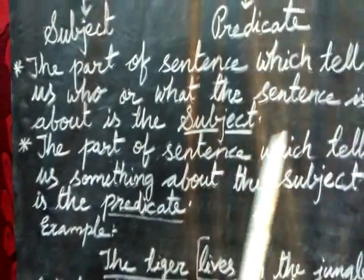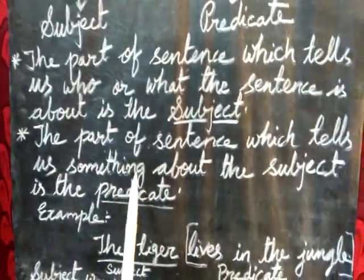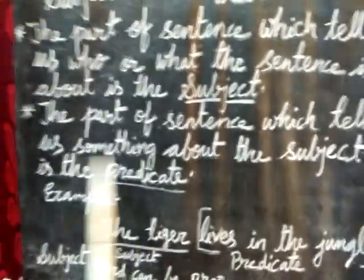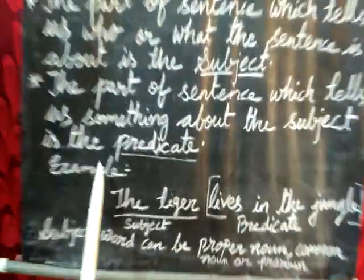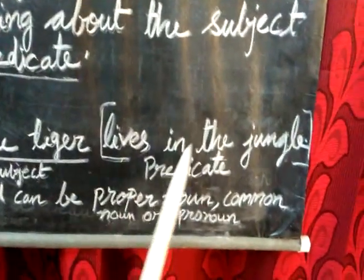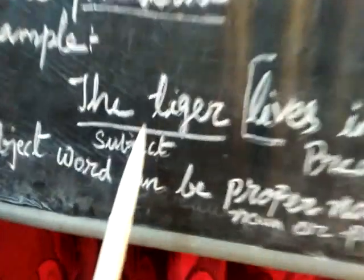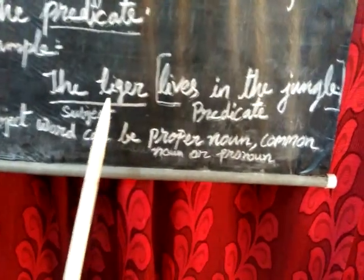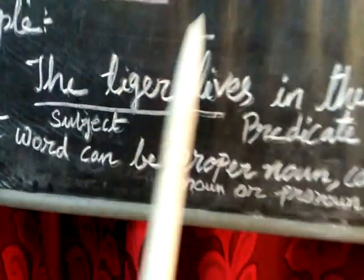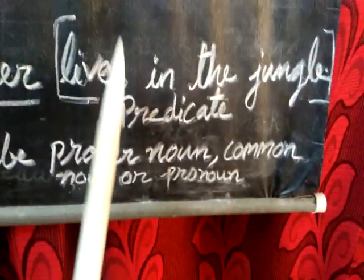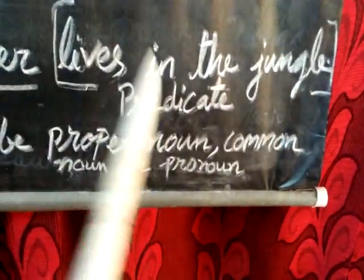The part of a sentence which tells us something about the subject is the predicate. For example: 'The tiger lives in the jungle.' The tiger is the subject because in this sentence we are talking about the tiger. Who lives in the jungle? The tiger. So the tiger is the subject, and the rest — 'lives in the jungle' — is the predicate.